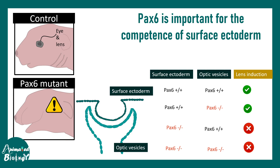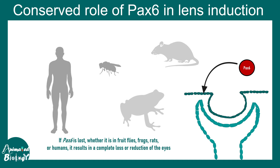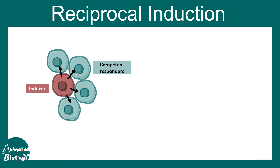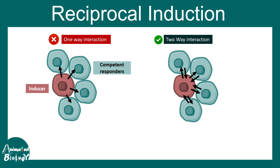PAX6 is important for lens induction regardless of species — in mammals, flies, frogs, and mice. When PAX6 is lost, the lens is never induced. Now, it's important to note this is never a one-way process. This is actually two-way, known as reciprocal induction. The inducer can also receive signals back from the responder — the inducer can be induced as well.